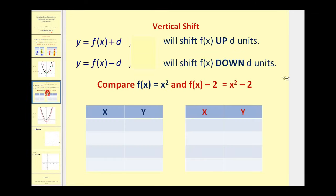Let's go ahead and talk about a vertical shift now. Y equals F of X plus D will shift F of X up D units, and Y equals F of X minus D will shift F of X down D units. This translation probably seems more logical. Remember F of X is equal to Y, so if we add D units to Y the function will shift up, and if we subtract D units from Y the function will shift down.